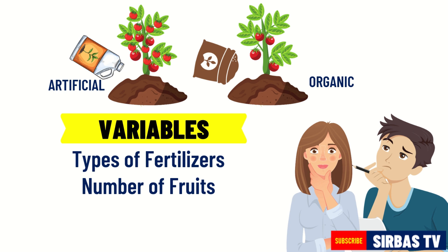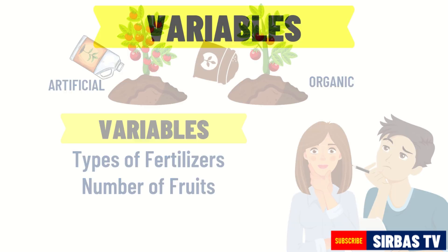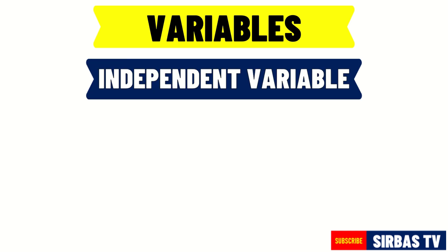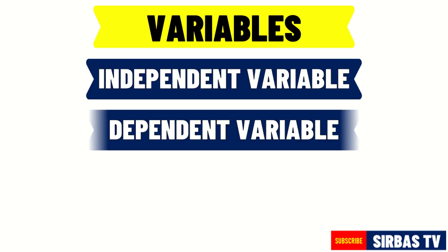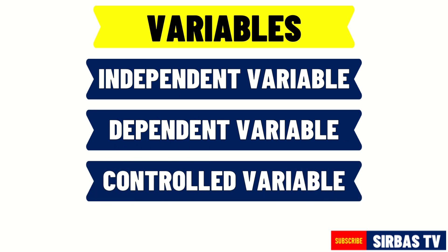There are three types of variables in a scientific experiment. These are independent variable, dependent variable, and controlled variables.